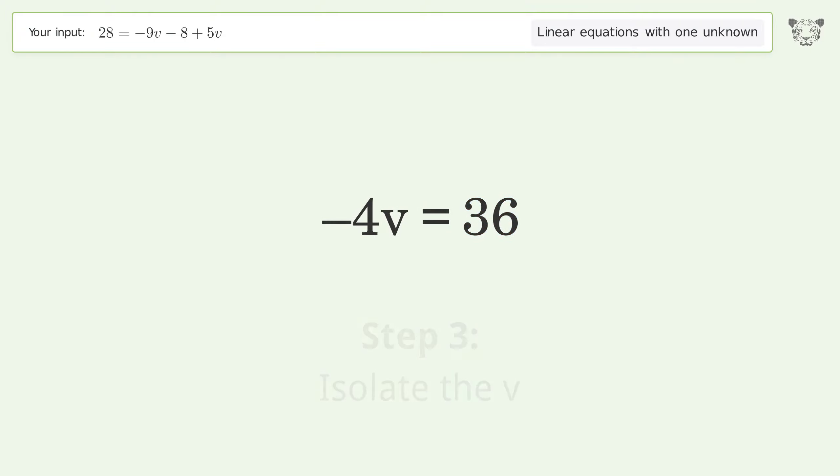Isolate the v. Divide both sides by negative 4. Cancel out the negatives. Simplify the fraction.